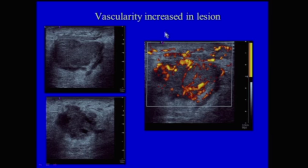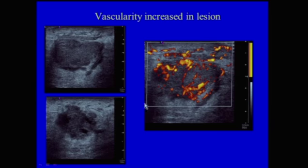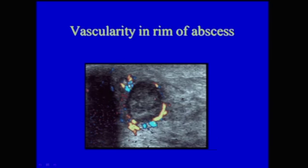Regarding the effect on vascularity: here is a very irregular mass with edema surrounding it — a suspicious mass showing increased blood flow not only to the mass but in the surrounding edematous tissue. A different patient shows only increased flow in the rim of the mass. The mass is well circumscribed and heterogeneous with no flow within it; the flow is in the surrounding tissue, and this is an abscess.